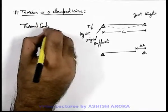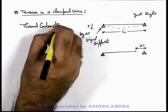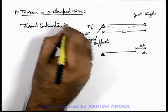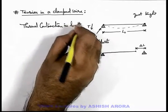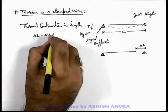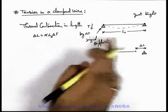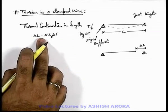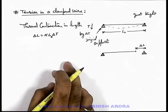And we can write thermal contraction in length will be delta L, which can be written as alpha L naught delta T. Length is L naught. Here alpha is the coefficient of linear expansion of this wire.